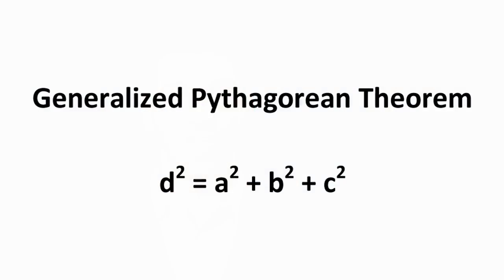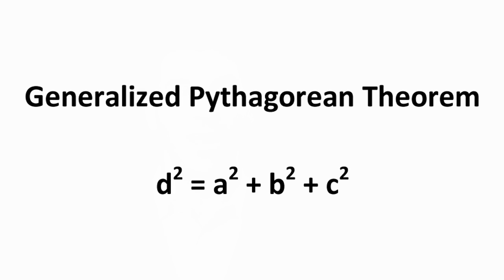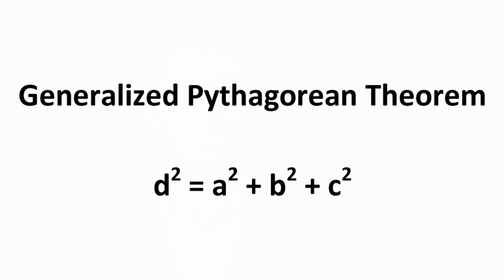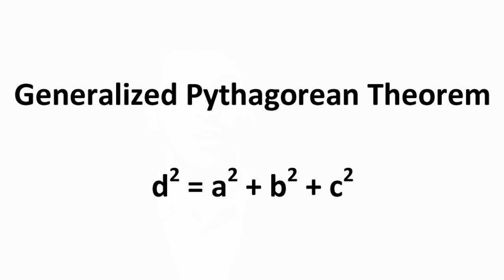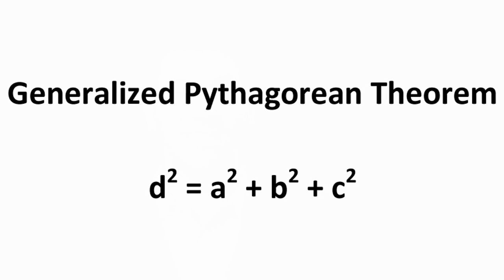The advanced student may also want to know the generalized Pythagorean theorem: d squared equals a squared plus b squared plus c squared. This simple formula is used to find the long diagonal of a rectangular solid, making a difficult geometry question easy to solve. This type of problem occasionally pops up on an SAT, but if you want to guarantee yourself an 800, you'd better be prepared for it.